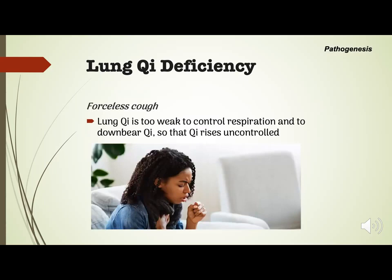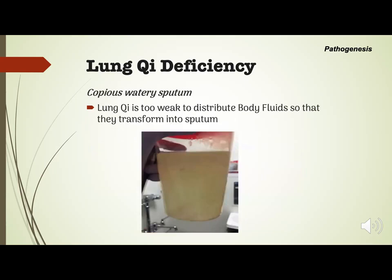As lung chi is too weak to control respiration and to downbear chi, chi rises uncontrolled — this will cause a forceless voice and forceless cough. Lung chi deficiency will also present with copious watery sputum, as lung chi is too weak to distribute body fluids, so they transform into sputum.